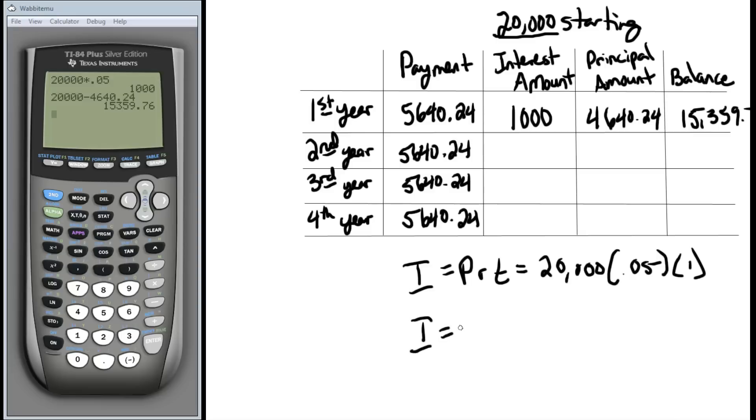Interest, it's PRT, which is now $15,359.76. The rate is still 5%, 0.05. And we're talking about accruing this across a whole year, one year. So now we have our balance, multiply by 0.05. And we will see that this year, we only accrued $767.99 in interest against us.